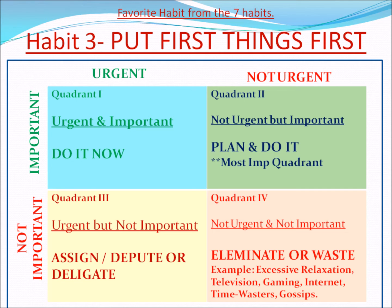Now we come to the next topic: my favorite habit from the 7 Habits. My favorite habit is Habit 3 — Put First Things First. It is divided into 4 quadrants. The first quadrant is urgent and important — you have to do it now, that means immediately.